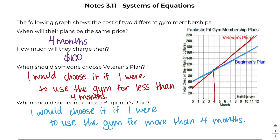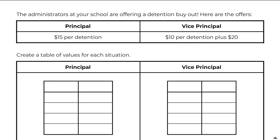I would choose the beginners plan if I were to use the gym for more than four months. That's essentially what a system of equations is, but sometimes you have to make these graphs on your own, so let's take a look at an example of that.